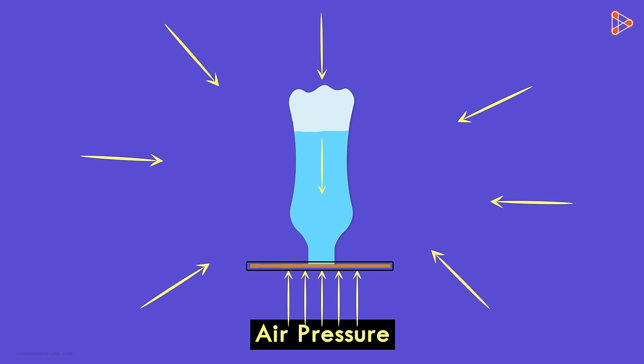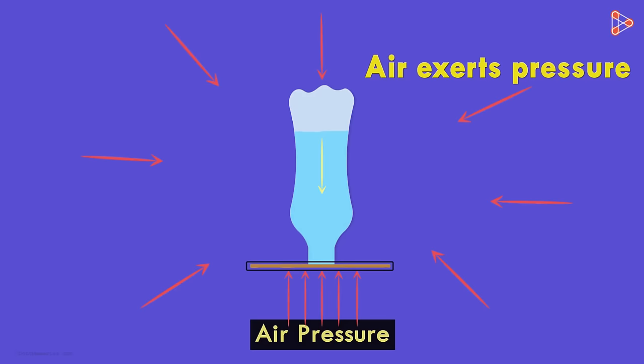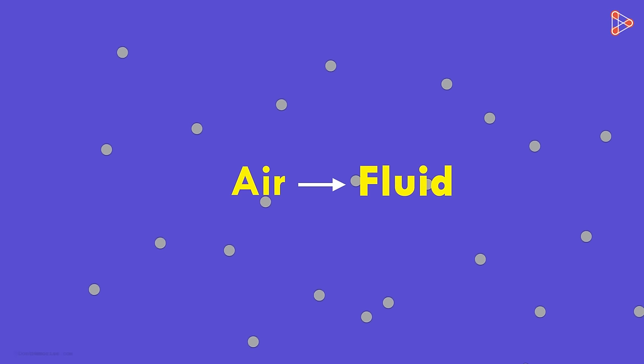With this activity, we can understand that air exerts pressure. You may note that the air pressure acts in all directions. Do you know why? It's because air is fluid. The molecules of air are very loosely held and hence they can easily move in all the directions.